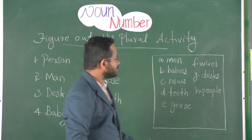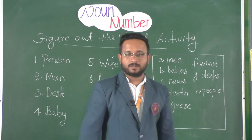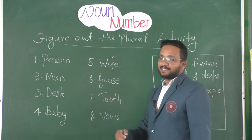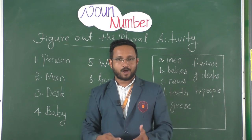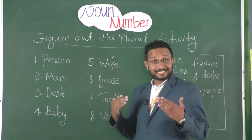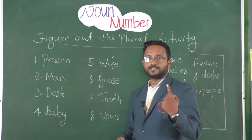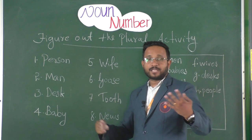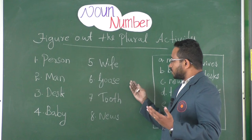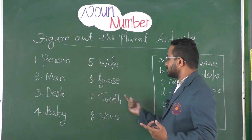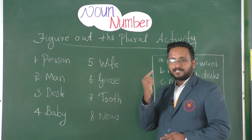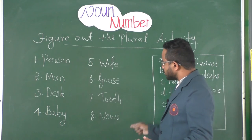The options are: people, men, babies, news, teeth, geese, wives, desks. What is matching? Yes — person becomes people, man becomes men, desk becomes desks, baby becomes babies, wife becomes wives, goose becomes geese, and tooth becomes teeth.